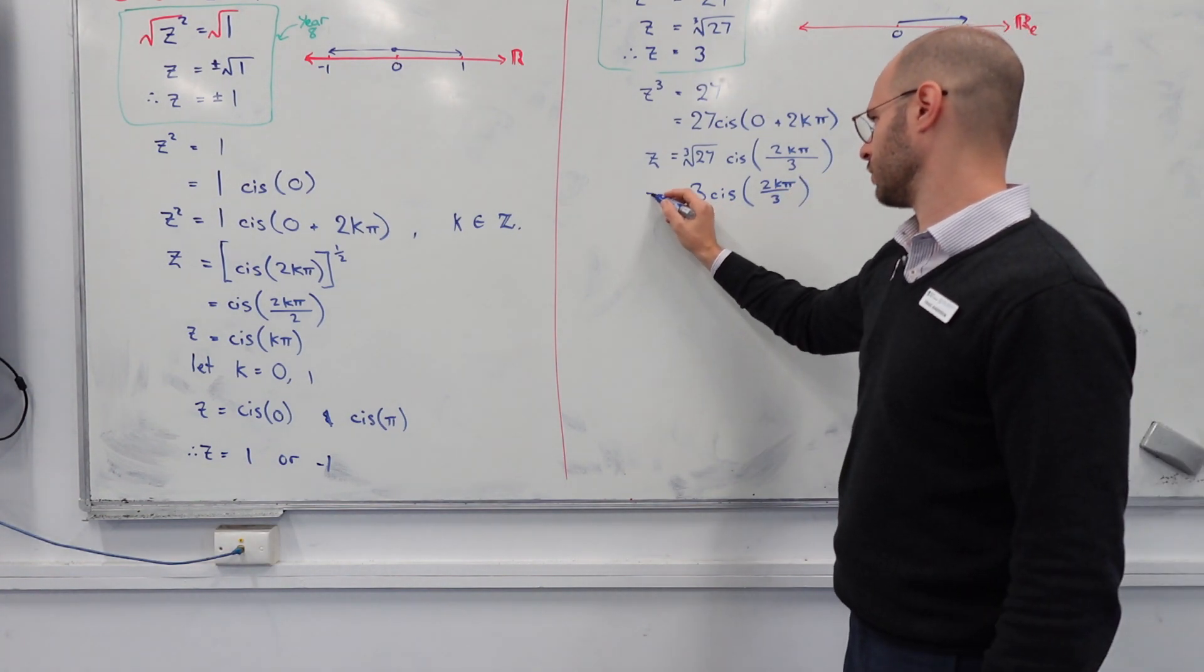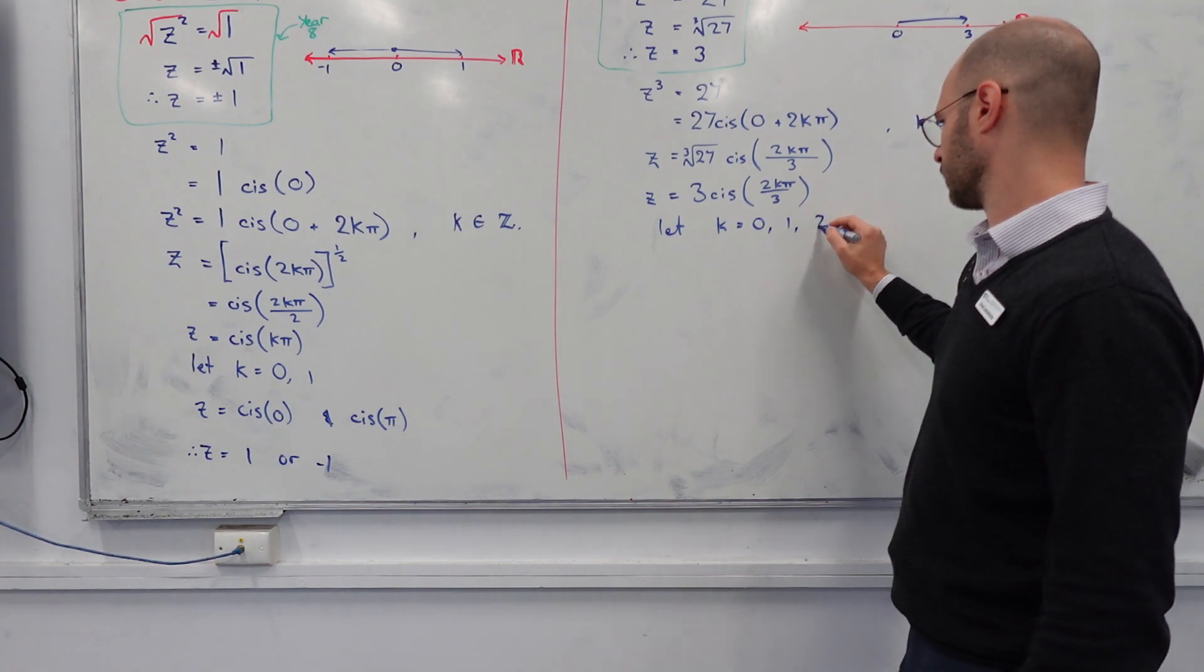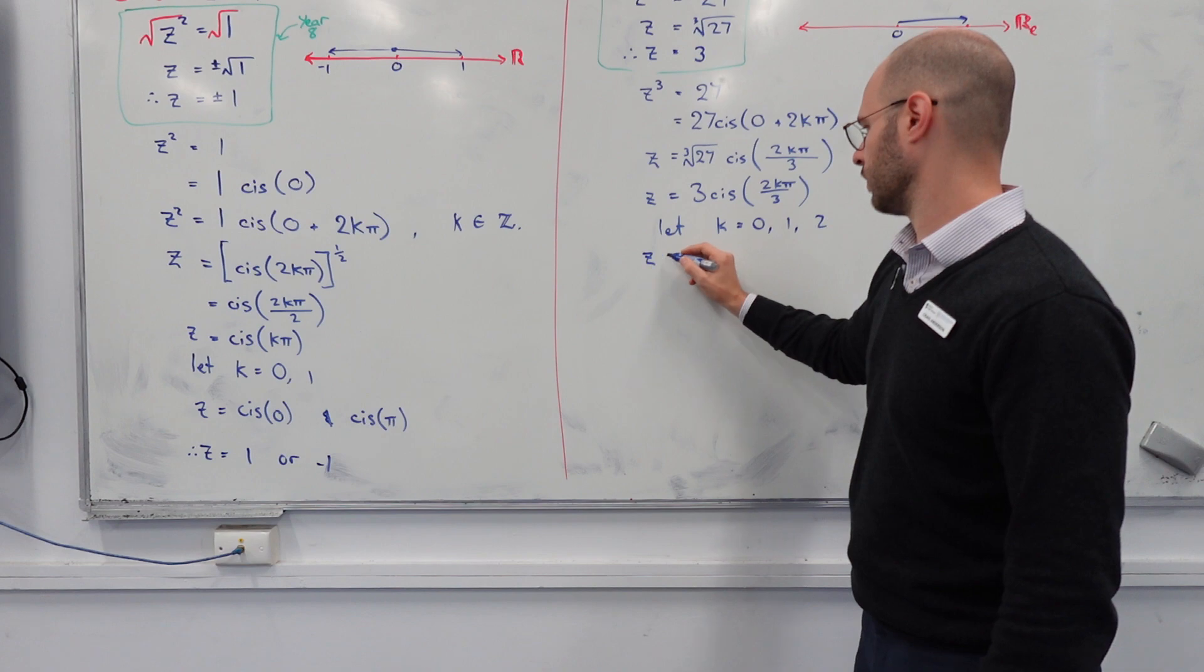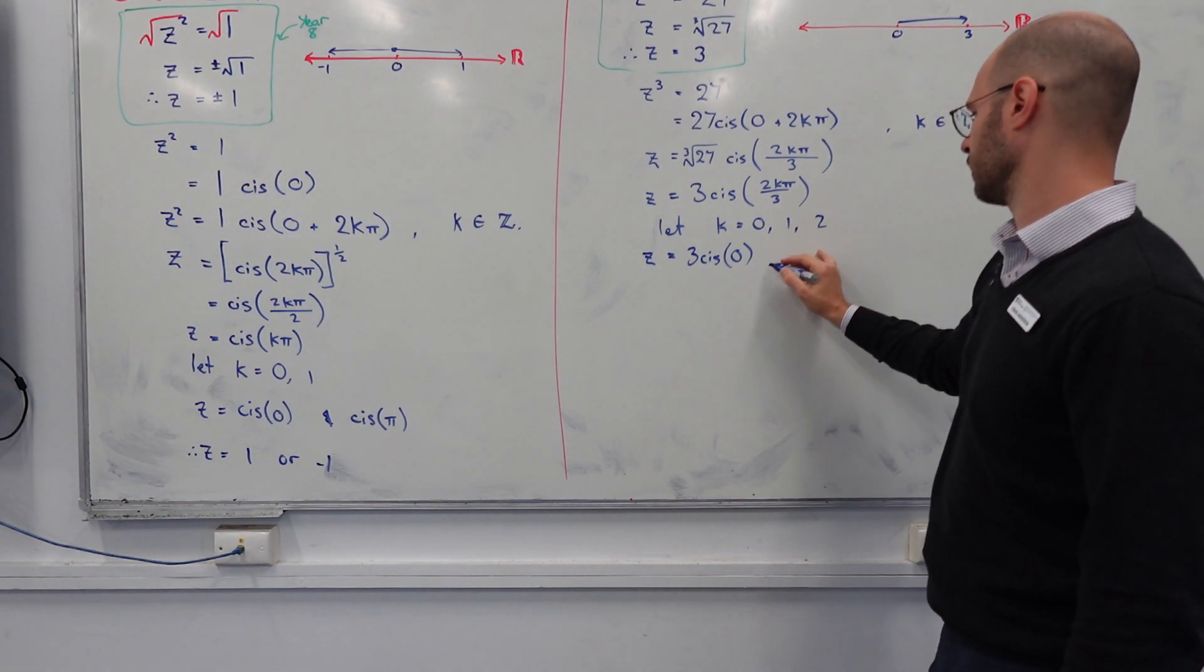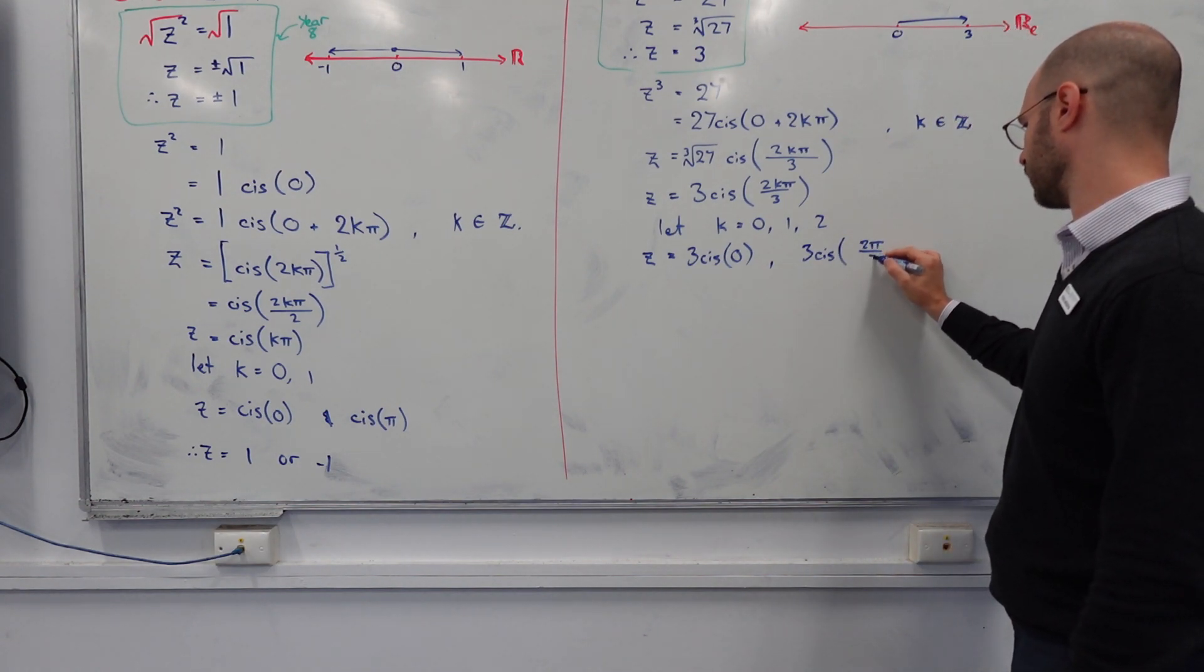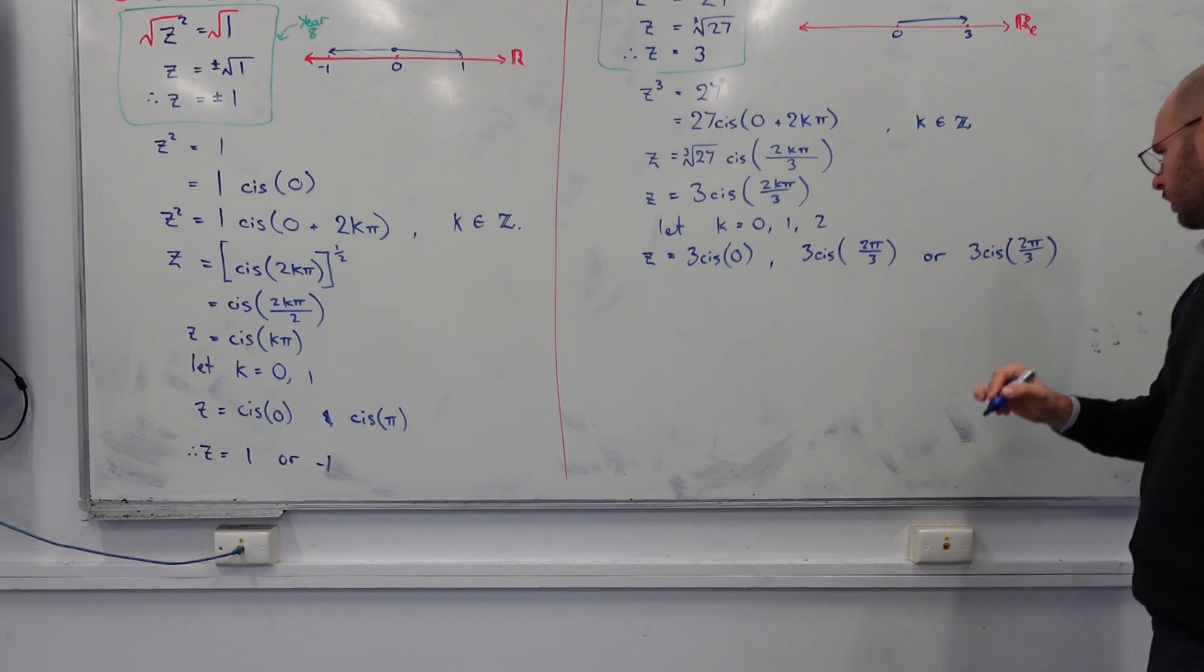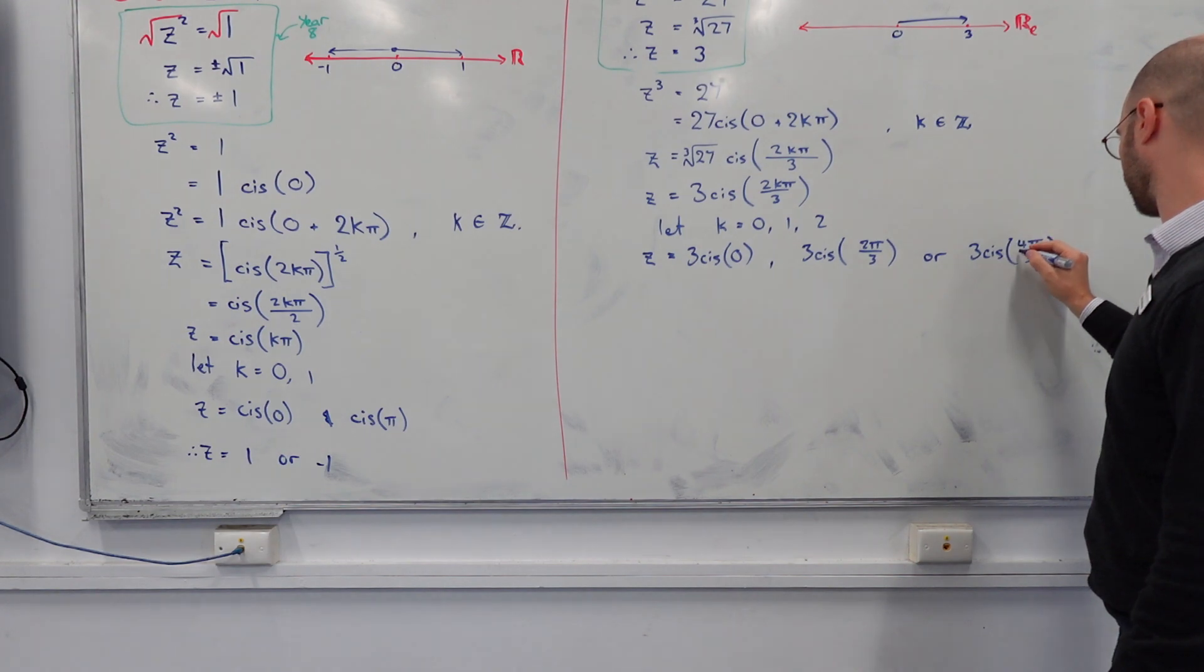So this is 27 cis of 0 plus 2k pi. Where k is an integer number. Could be positive or negative. Next, this is going to be cube root of 27, cis 2k pi to the power of one third. Moving down, this will be 3 cis 2k pi over 3. And what values of k we're going to pick here? 0, 1, 2. Or 3, 4, 5. It doesn't matter. Just pick 3 consecutive numbers. Therefore, z is going to be 3 cis 0. There's your first solution. 3 cis 2 pi over 3, or 4 pi over 3.